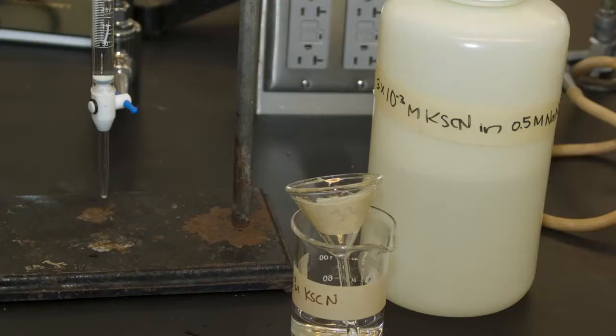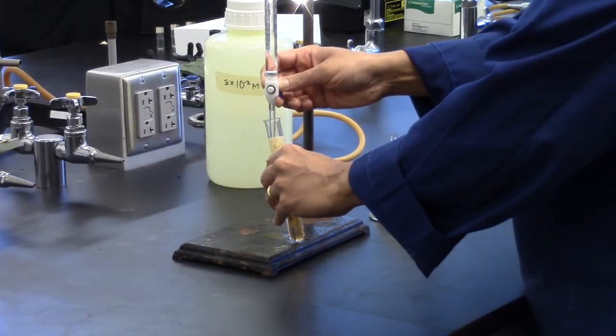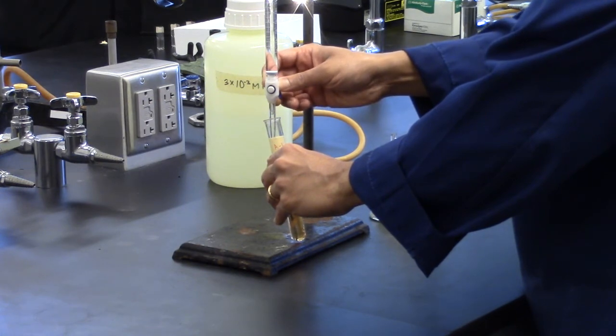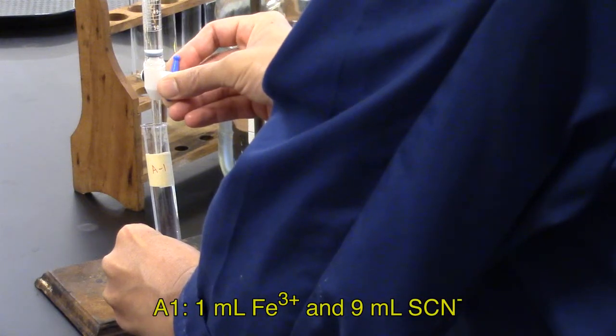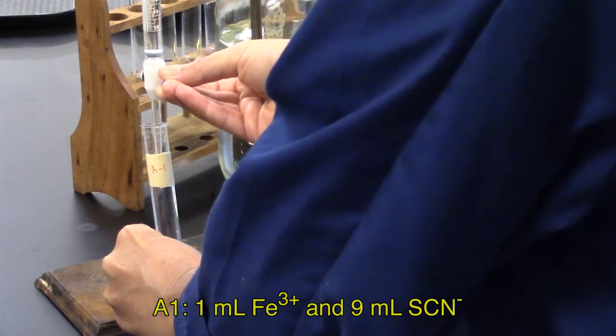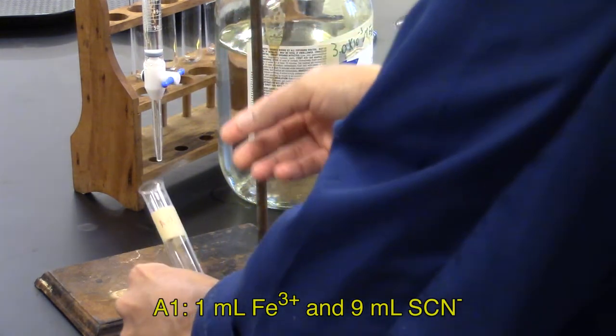and the other has 3.0 times 10 to the minus 3 potassium thiocyanate. Use medium-sized test tubes for the solution. Five different samples are listed in this table. Use burettes to measure the appropriate amounts of iron-3 and thiocyanate.